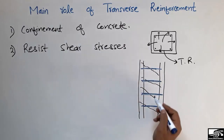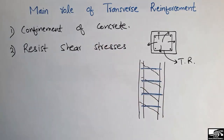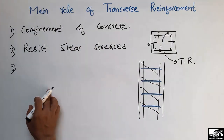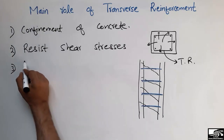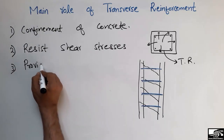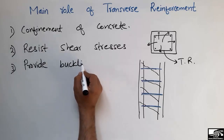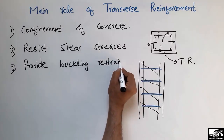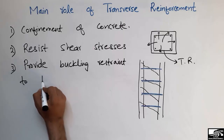So shear stresses are resisted by the transverse reinforcement. The third purpose for providing transverse reinforcement in a structural element — especially for columns — is to provide buckling restraint to the longitudinal bars.